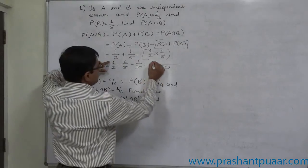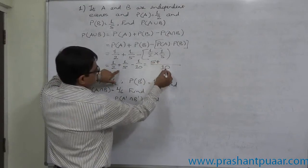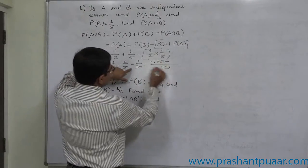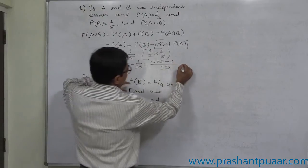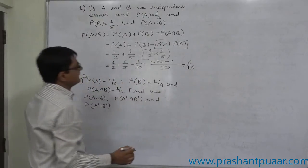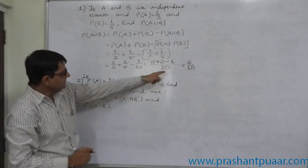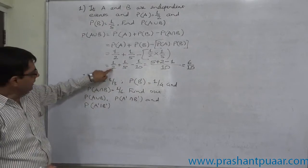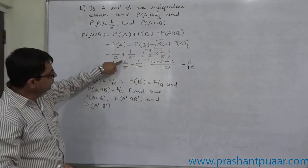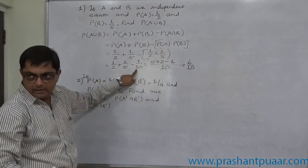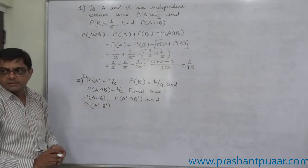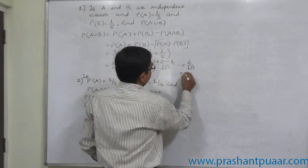With LCM 10: 10 divided by 2 gives 5, times 1 equals 5; plus 10 divided by 5 gives 2, times 1 equals 2; minus 10 divided by 10 gives 1, times 1 equals 1. So ultimately the answer is 6/10 or 0.6.